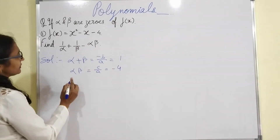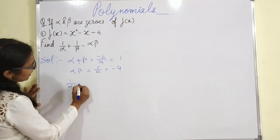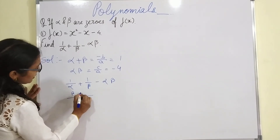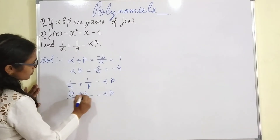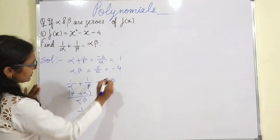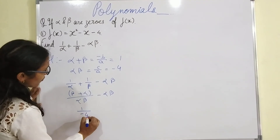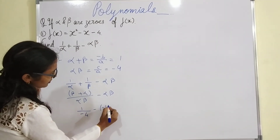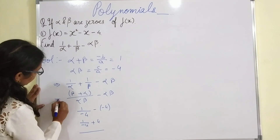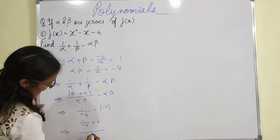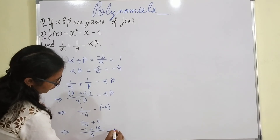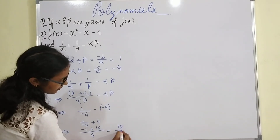Now we put these values to solve the expression: 1/α + 1/β − αβ. This simplifies to (β + α)/(αβ) − αβ, which equals (sum of zeros)/(product of zeros) − (product of zeros). Substituting: 1/(−4) − (−4), giving −1/4 + 4 = (−1 + 16)/4 = 15/4.